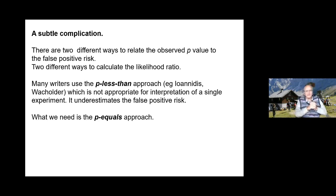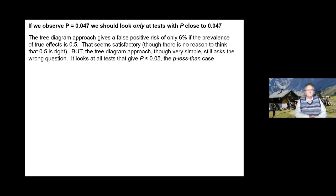A lot of writers, including Ioannidis and Wacholder and many others, use the p-less-than approach. That's what that tree diagram gives you, but it is not what is appropriate for interpretation of a single experiment. It underestimates the false positive risk. What we need is the p-equals approach.